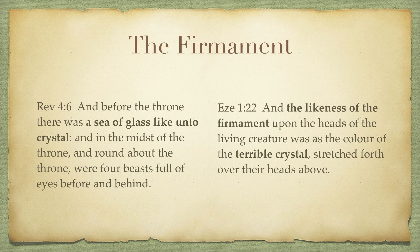Moses described the firmament as clear sapphire work and Ezekiel as the likeness of crystal. Now notice how John in Revelation describes a similar vision: 'And before the throne was a sea of glass like unto crystal.' Ezekiel and John appear to be seeing something very similar — both describe it with the same words. The firmament is like unto terrible crystal stretched out, and John describes before God's throne a sea of glass like unto crystal, with four beasts around and before the throne.